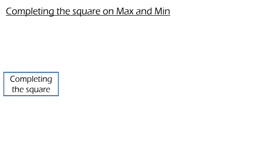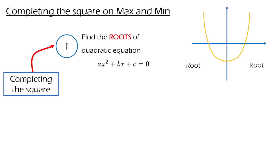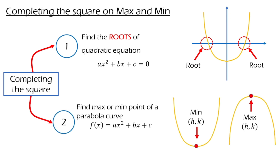Hey guys, today we are going to talk about how to use the completing the square method to find the maximum or minimum point on a parabola curve. As you guys know, completing the square can be used to find two things: one is the root of a quadratic equation, and the second one is to find the maximum or minimum point. This can be done by converting it into vertex form.